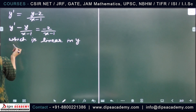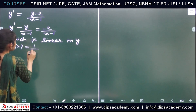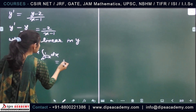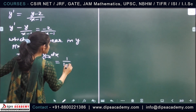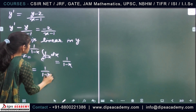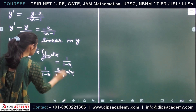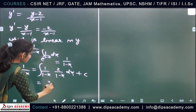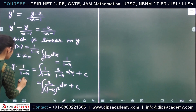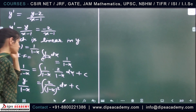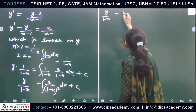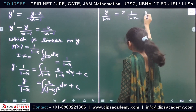Here p(x) = 1/(1 − x), so the integrating factor is e^(∫1/(1−x)dx) = 1/(1−x). The solution is y · (1/(1−x)) = ∫2/(1−x)² dx + c, which gives y/(1−x) = 1/(1−x) + c, or equivalently y = 2 + c·(1−x).